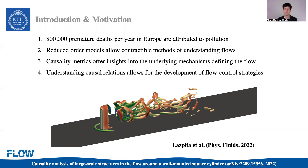To do this, we employ reduced-order models of the flow around a single wall-mounted obstacle, which represents a very simplified urban environment. Based on this reduced-order model, we employ a causality matrix to further examine the interactions between the underlying mechanisms defining the flow. This is particularly novel in the context of urban flows, and understanding these causal interactions between the modes allows for the development of flow control strategies in the future.